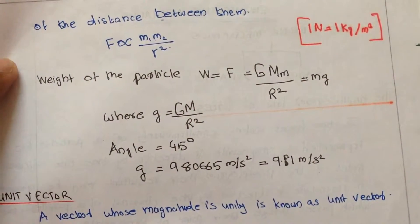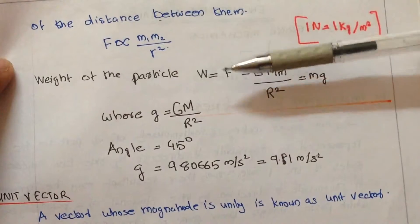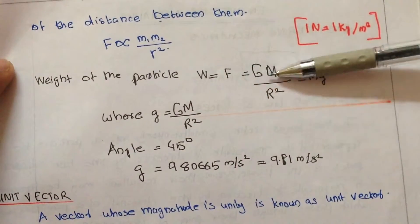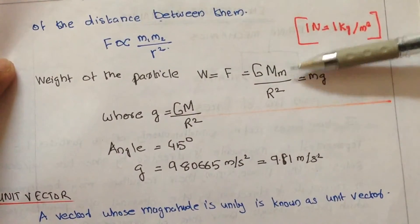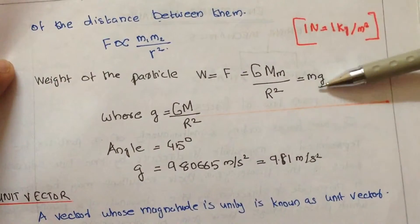For remembering this unit, weight of the particle W equals F equals G M m by r squared equals mg.